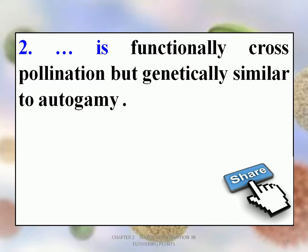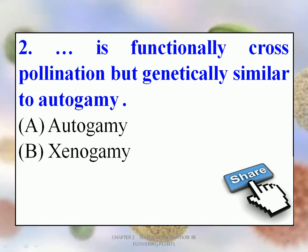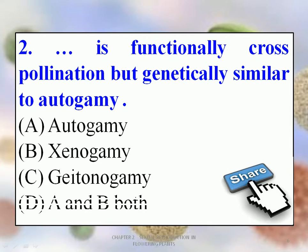Second MCQ: Dash is functionally cross-pollination but genetically similar to autogamy. Options: A. Autogamy, B. Xenogamy, C. Geitonogamy, D. A and B Both. The correct option is C. Geitonogamy. The speciality of Geitonogamy is that it is like autogamy on a genetic basis while it functions as a cross-pollination technique — it is two in one.